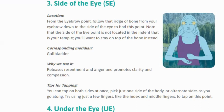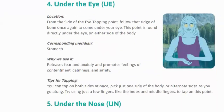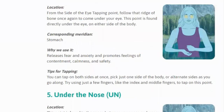Side by side — the eyebrow point, following the ridge from your eyebrow down to the side of your eye — this is gallbladder, resentment, and anger. Now under the eye: this is for the stomach, feelings, and safety. Under the eye — we tap like this.